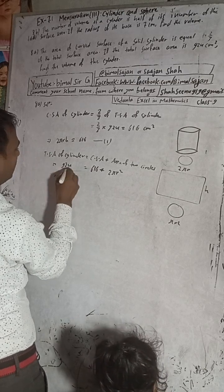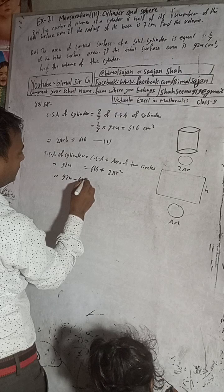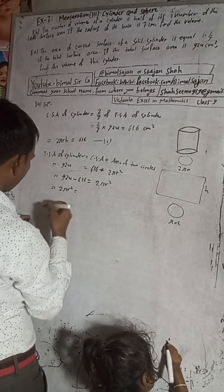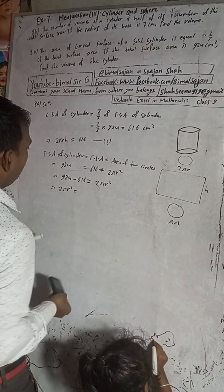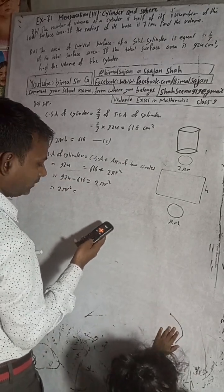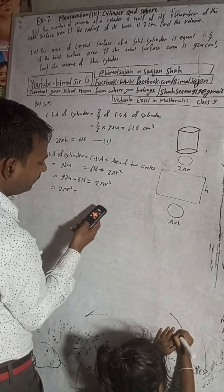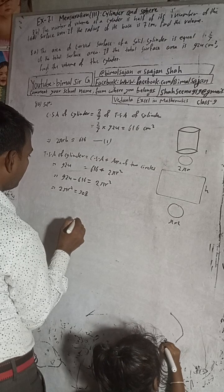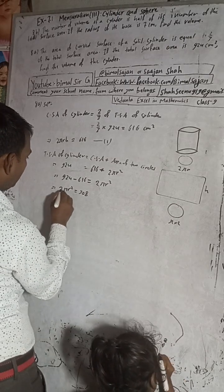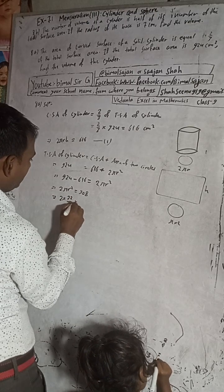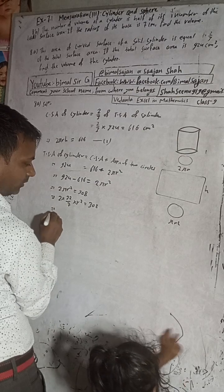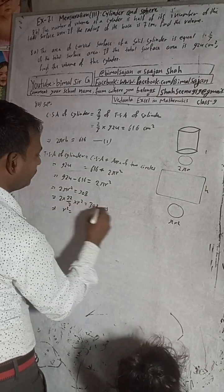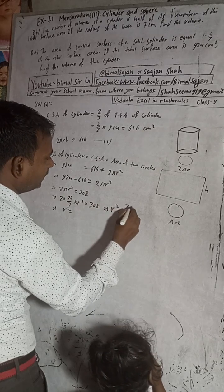Solving: 2πr² = 924 − 616 = 308. So 2 × (22/7) × r² = 308.